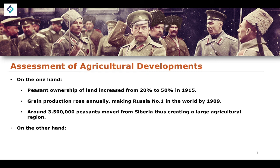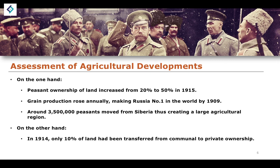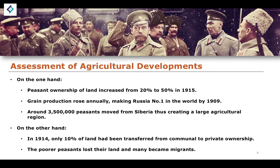On the other hand, in 1914 only 10% of land had been transferred from communal to private ownership, and the poorer peasants lost their land, with many becoming migrants. So while these reforms benefited quite a lot of the peasant class, the lowest and poorest within the peasantry still managed to lose out as a result of these economic reforms.